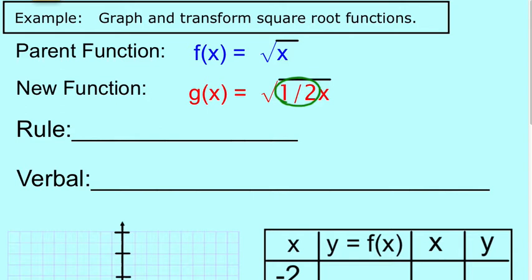If you remember the square root function for a parent, it kind of starts off here and goes off to the right. We want to figure out what happens when you multiply by one-half. Notice where the one-half is. The one-half is inside the function, and it's multiplying.